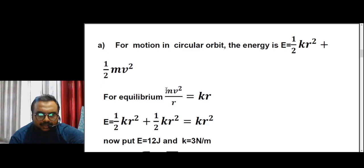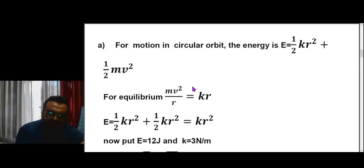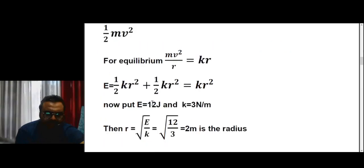For the equilibrium case — when there is no net force along the radial direction — the centripetal force equals the spring force. Just as for Earth around the Sun the gravitational force equals the centrifugal force, here we equate the two terms. Substituting mv² = kr² into the energy equation, the total energy becomes kr². From this, r equals the square root of E over k, which gives r = 2 meters.